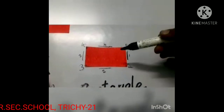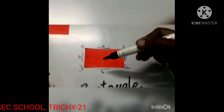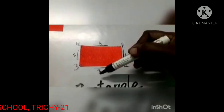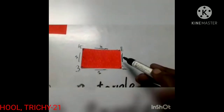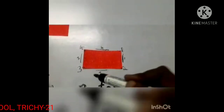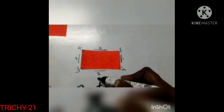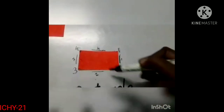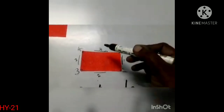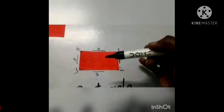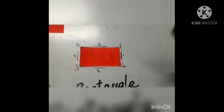In this rectangle, the opposite sides are equal. This side and this opposite side are equal in length. Opposite sides are equal in length. Rectangle has four corners and four sides, and opposite sides are equal in length. I hope you enjoyed this session. Thanks for listening. Bye to all.